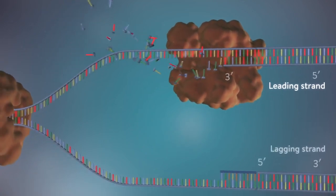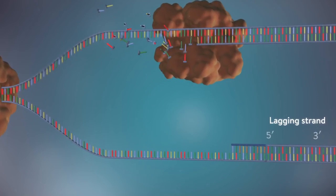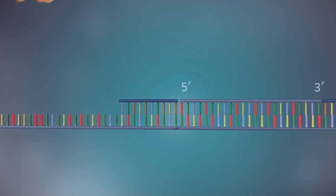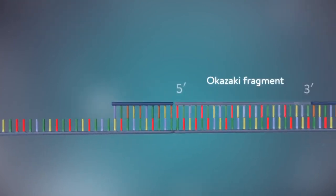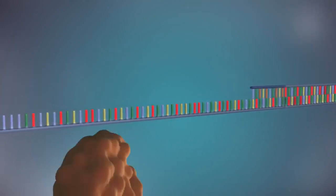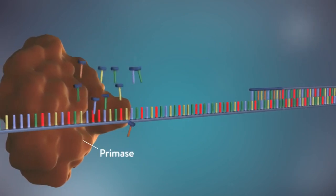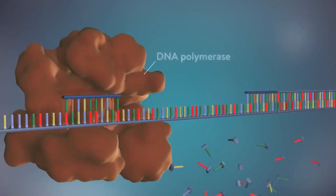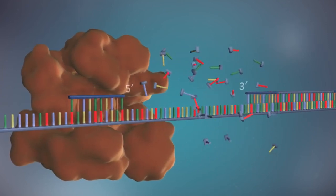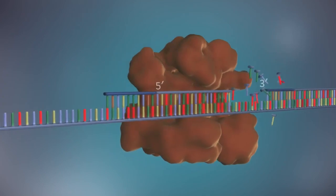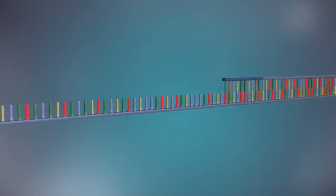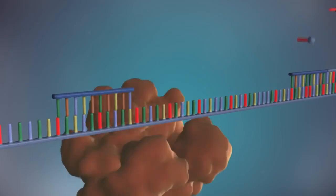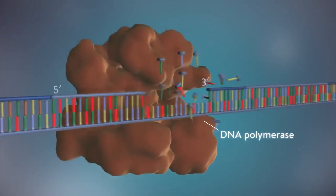The other strand, the lagging strand, cannot be made in this continuous way because it runs in the opposite direction. The DNA polymerase can therefore only make this strand in a series of small chunks called Okazaki fragments. Each fragment is started with an RNA primer. DNA polymerase then adds a short row of DNA bases in the five prime to three prime direction. The next primer is then added further down the lagging strand, and another Okazaki fragment is made. The process is then repeated.